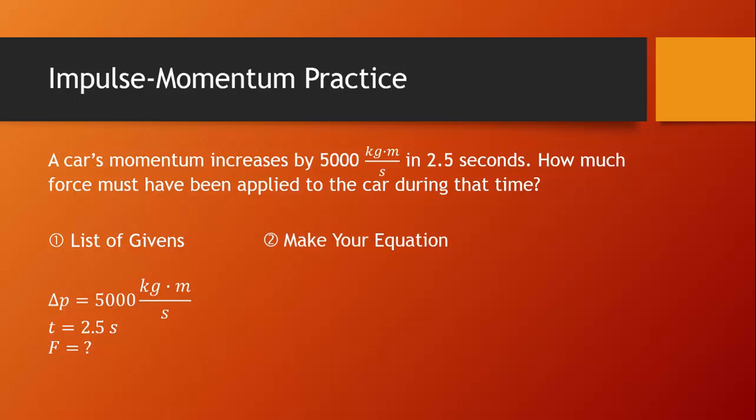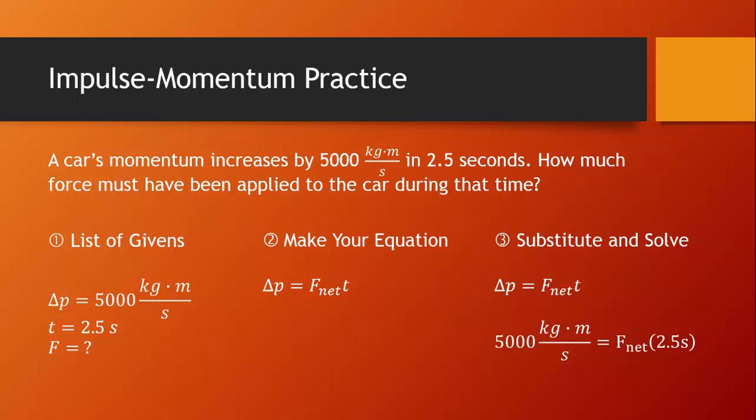Now we can make our equation. Since we're looking for the force, we should definitely use the f net t term as one of our two choices. Since we're given the change in momentum, we should make that our second choice. This means we'll write the equation delta p equals f net t. Now we can substitute in what we know and solve. 5,000 kgm per second equals f net times 2.5 seconds. And we find that the net force is 2,000 newtons.